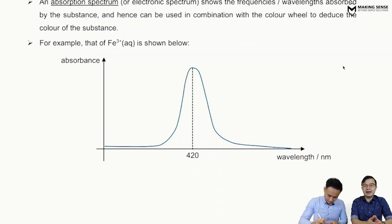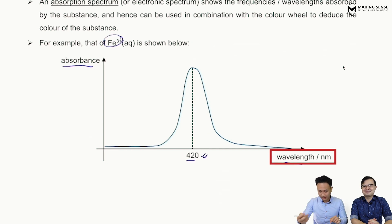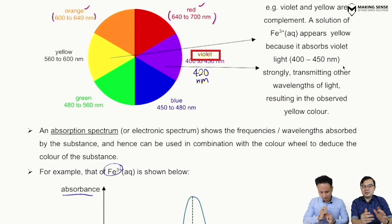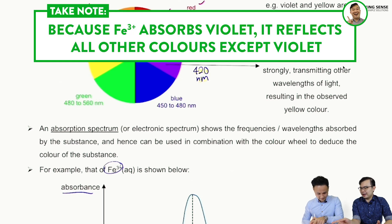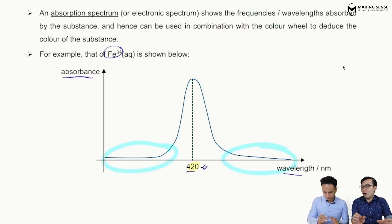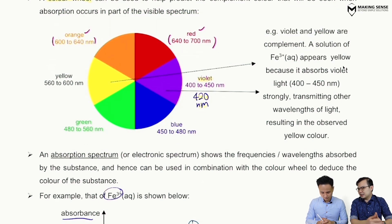If I take a look at the absorption spectrum for Fe³⁺, at the 420 nanometer wavelength, Fe³⁺ absorbs a large amount of this wavelength. Going back to the color wheel, 420 nanometers sits in the violet region. But didn't we say Fe³⁺ is yellow — aren't we absorbing violet? Yes — you absorb violet, but you are actually reflecting all the colors other than violet. For the other wavelengths not around 420nm, absorbance is very low, so all those other colors are reflected, and the combination of all those reflected colors gives us the yellow color.